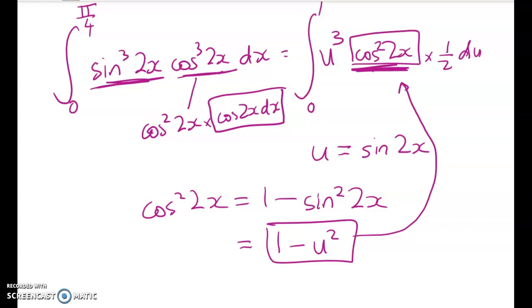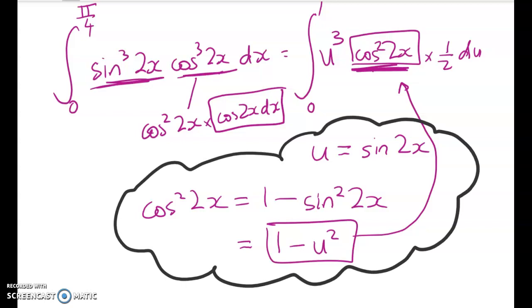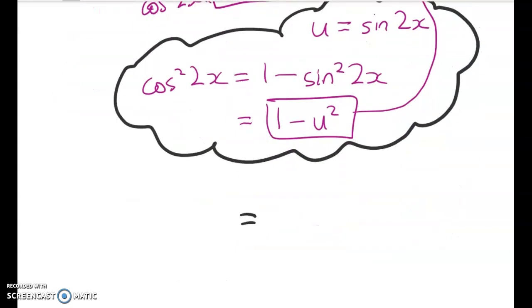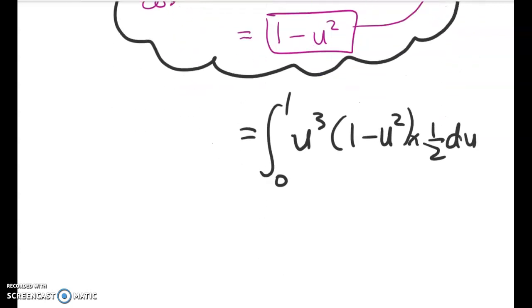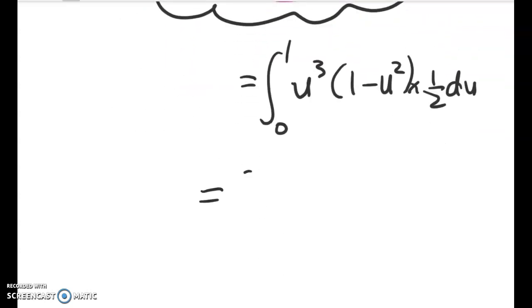So let's just put all of that messy working off to the side. Wow, what a big mess. We've got this. So equals the integral from 1 to 0 of u cubed times 1 minus u squared times 1 half du. Now we're just about ready to go.